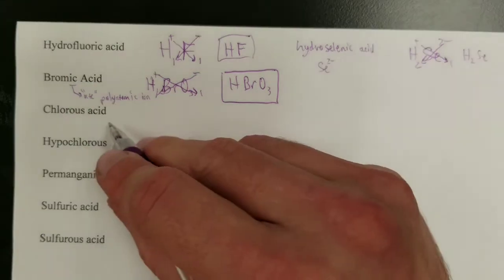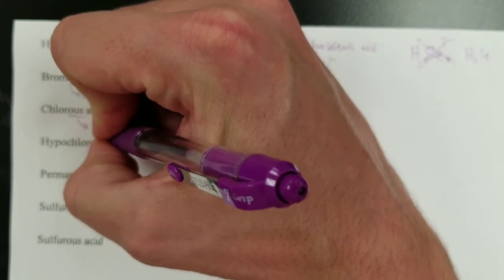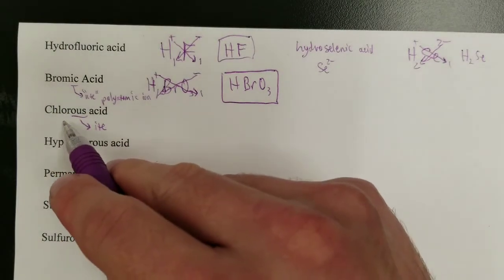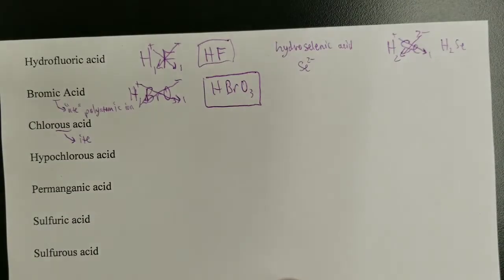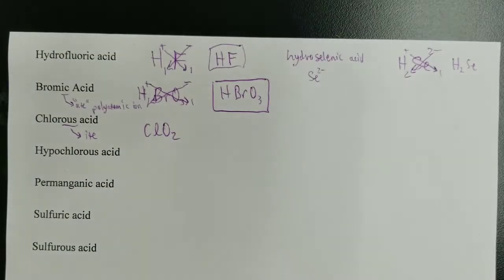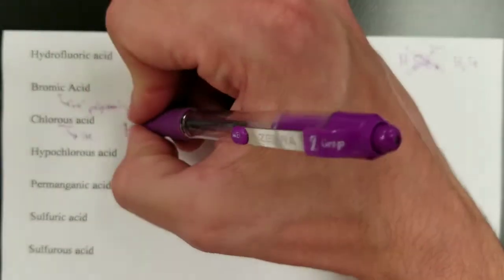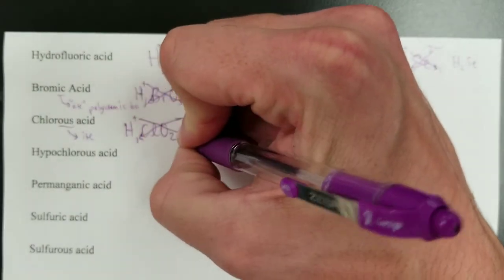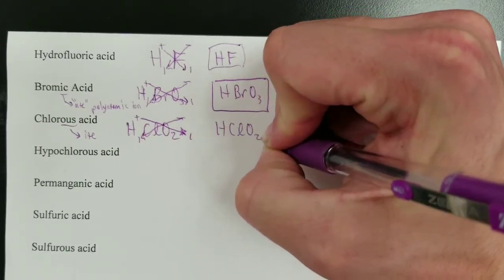Chlorous acid: the '-ous' ending means the anion is an '-ite,' so we think chlorite. From the list of polyatomic ions, chlorite is ClO₂ with a 1-minus charge. Since it's an acid, there must be an H. H is 1-plus and chlorite is 1-minus, so one hydrogen and one chlorite gives the formula HClO₂.